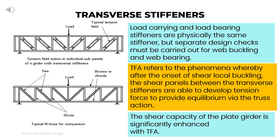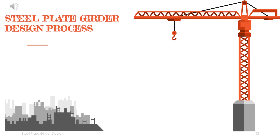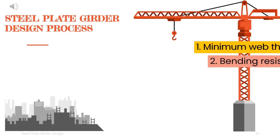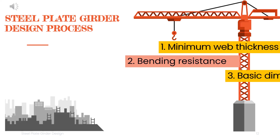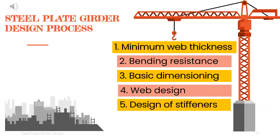Tension field action refers to the phenomenon whereby, after the onset of shear local buckling, the shear capacity of the plate girder is significantly enhanced. The design process of a steel plate girder starts with calculating the minimum web thickness, followed by bending resistance, basic dimensioning, web design, and finally design of stiffeners.